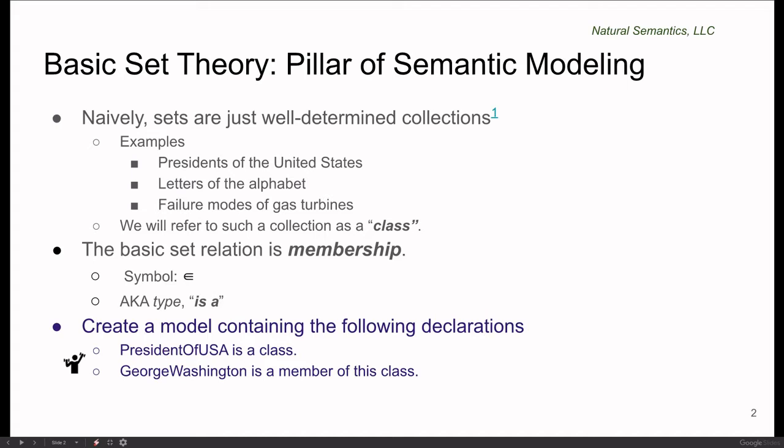The basic set relationship is that of membership. The symbol for membership is a capital E with the corners rounded off. And in our controlled English, we will talk about set membership using is a, as in George Washington is a President of USA.